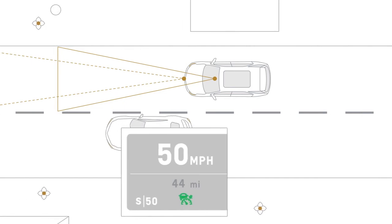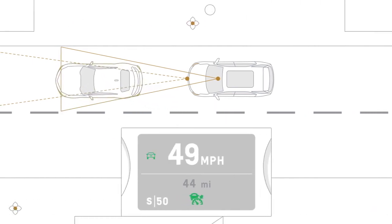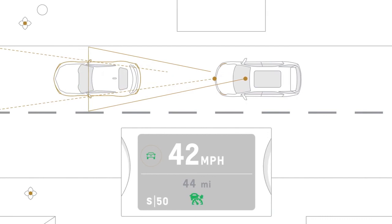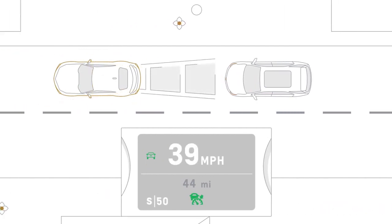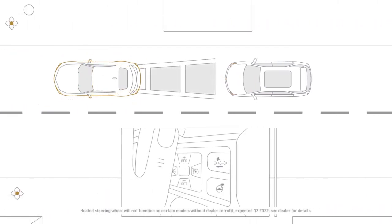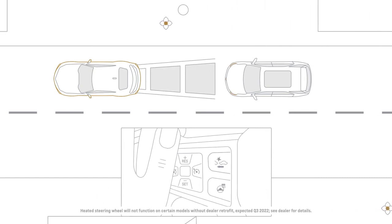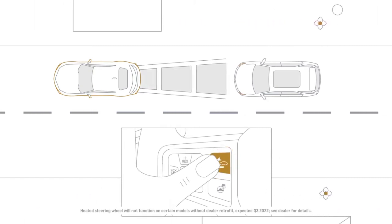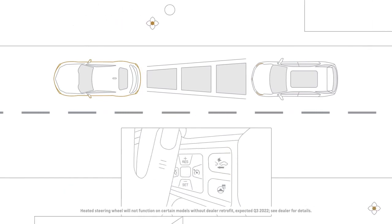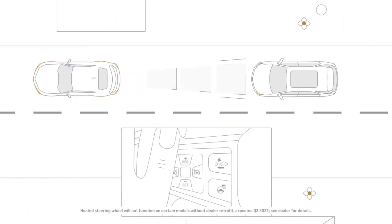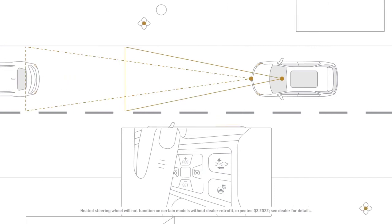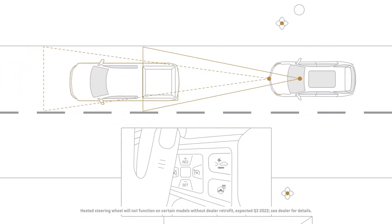When the system detects a vehicle in the driving lane ahead, the Vehicle Ahead icon will light up and it will adjust the speed to maintain the following gap. To temporarily increase the following gap, press and hold the Gap Setting button on the steering wheel when the vehicle is moving. The following gap between your vehicle and the vehicle ahead will temporarily increase to allow for merging traffic.